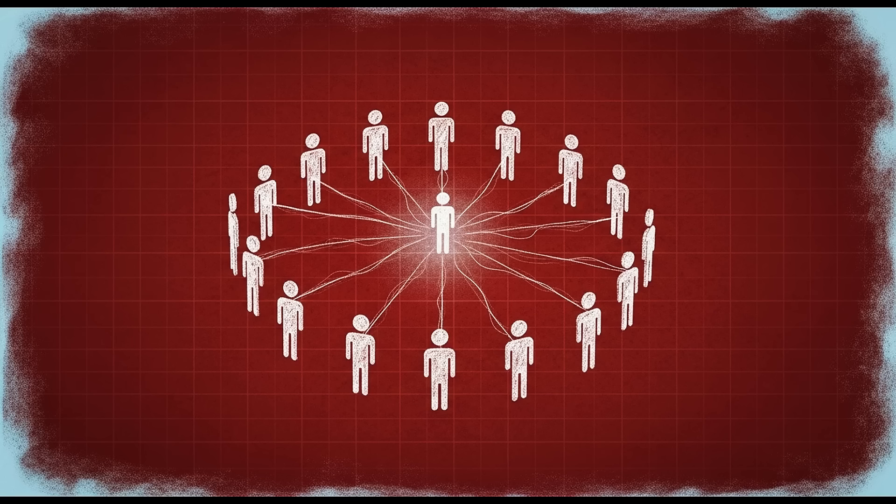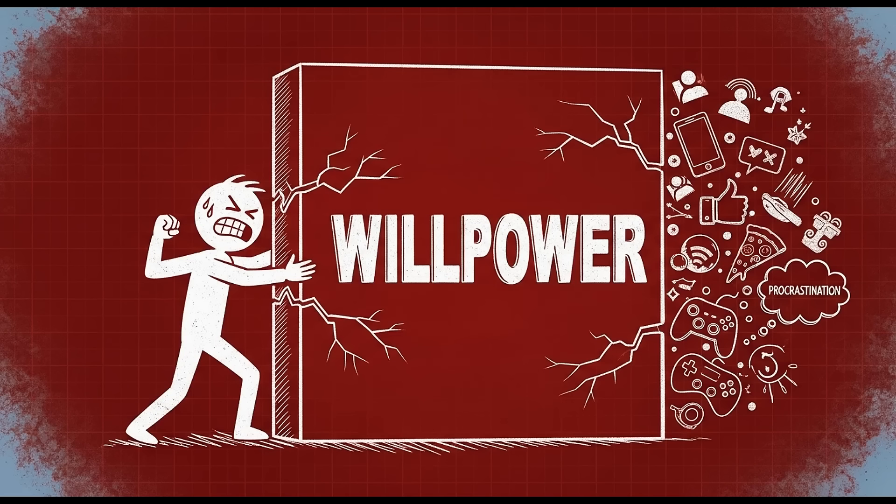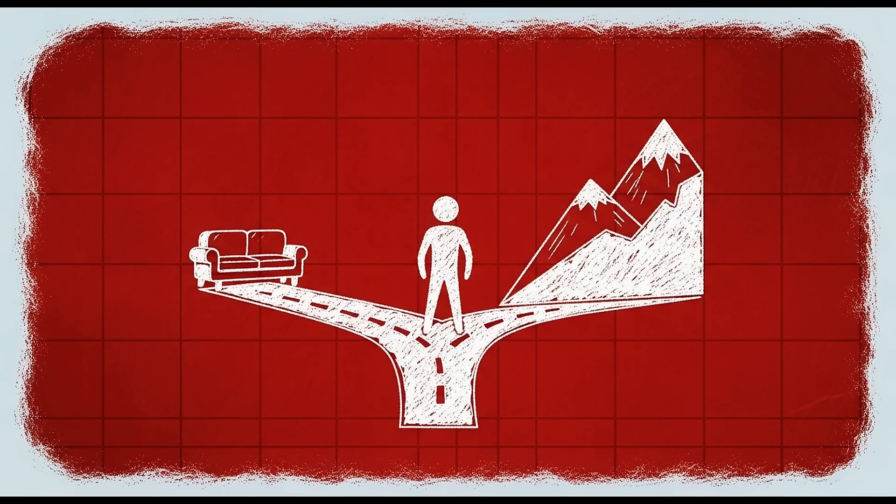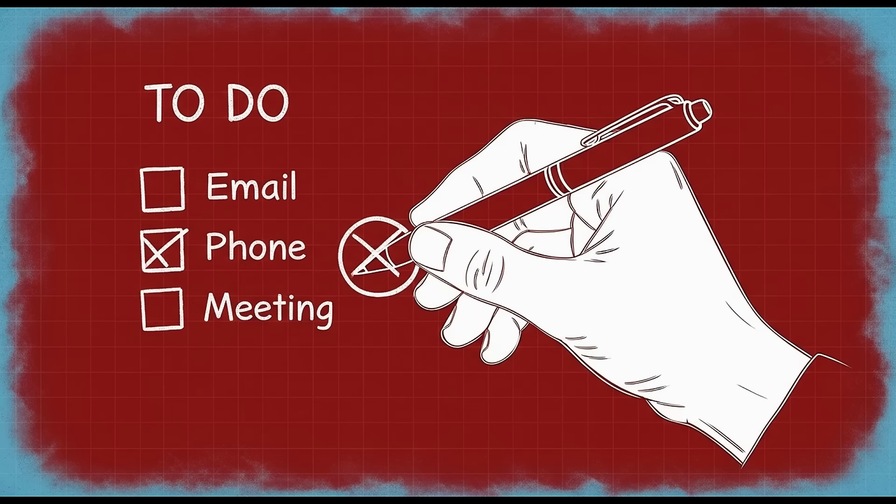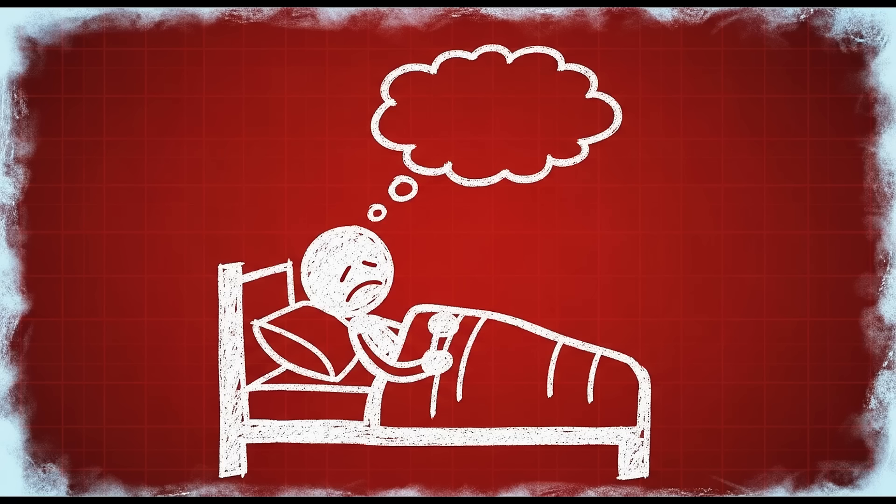Meanwhile, instant gratification activates more primitive parts of your brain, the limbic system, which operates on impulse and emotion. Every time you choose discipline over distraction, you're quite literally strengthening the advanced parts of your brain and weakening the primitive parts. You're upgrading your operating system. Over time, this changes your default setting. Discipline stops feeling like a battle against yourself and starts feeling like your natural state. This is what people mean when they say discipline becomes a habit. It's not that it becomes easy. It's that your brain rewires to prefer it.